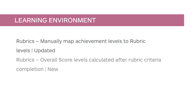Instructors can now manually map achievement levels to rubric levels for all types of rubrics. Instructors are also able to override the percentage scale alignment with respect to an individual rubric if they choose to do so.